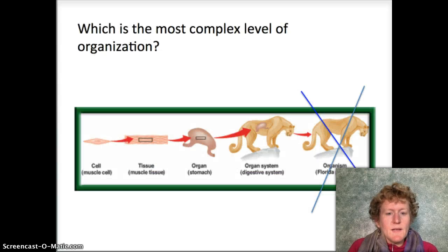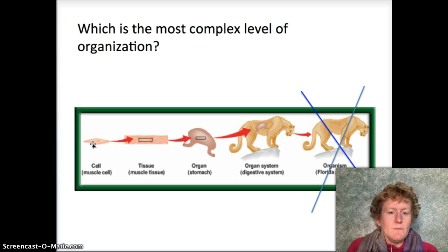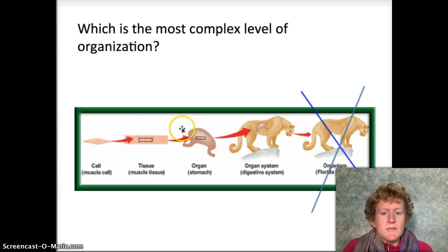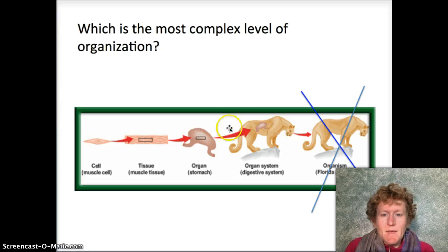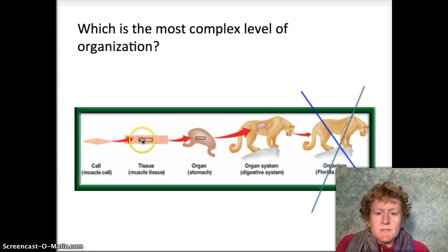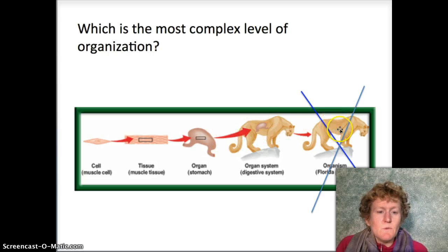When we organize cells, we can take a specialized cell and put a group of those specialized cells together to make a tissue. Those tissues get together and form an organ. For example, certain muscle cells are in your stomach, and your stomach is part of an organ system — the digestive system. So when you organize cells, you get cells, tissues, organs, and organ systems.